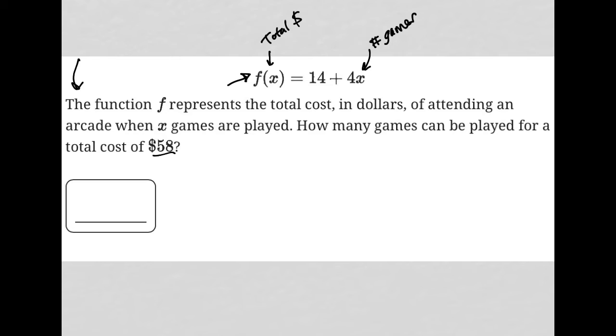So basically this is saying if I replace, I'll just rewrite this, if f of x equals 14 plus 4x, and f of x represents total cost. So therefore, if you tell me that my total cost is now $58, I can replace f of x with 58.